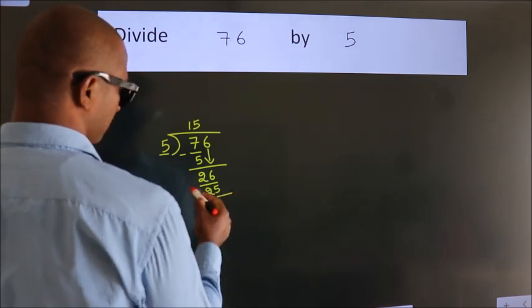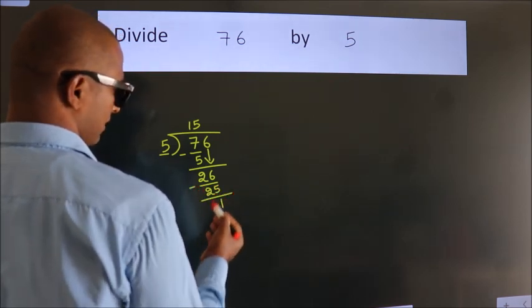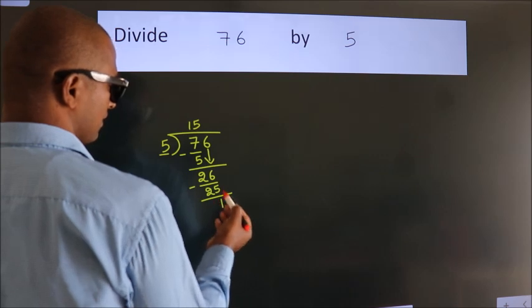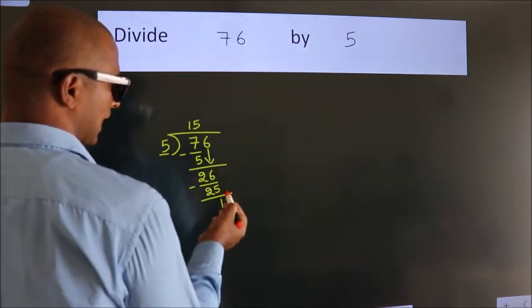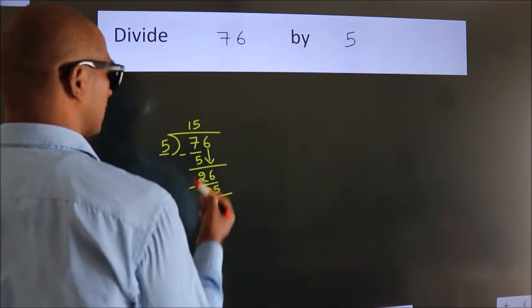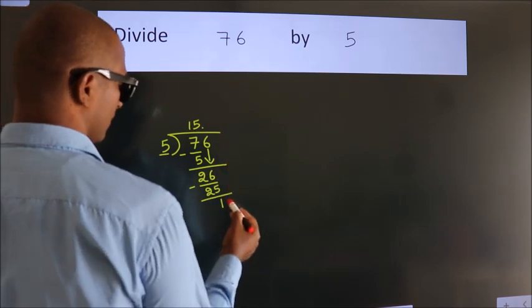Now, we subtract. We get 1. After this, no more numbers to bring it down. So, what we do is, we put dot take 0.